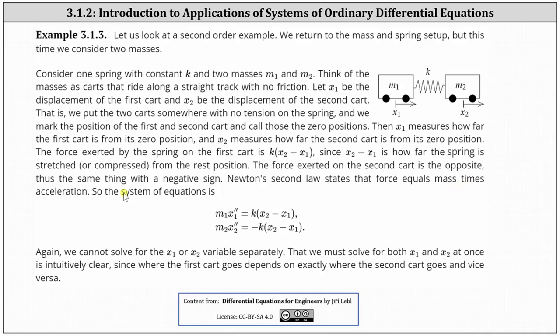Newton's second law states that force equals mass times acceleration. So the system of equations is M1 times x1 double prime equals K times the difference of x2 and x1, and M2 times x2 double prime equals negative K times the difference of x2 and x1.